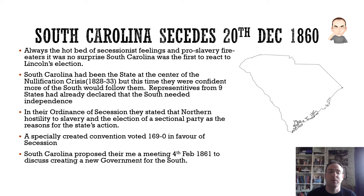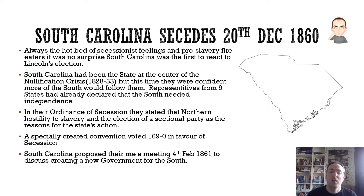They said the reason they were doing it was that there was a sectional party in control of the federal government — a man hostile to slavery and their interests being elected to the White House. This northern hostility meant continuing in the Union was not possible. South Carolina proposed that on the 4th of February there should be a meeting, not in South Carolina but in Montgomery, Alabama, to set up a new Confederate government.